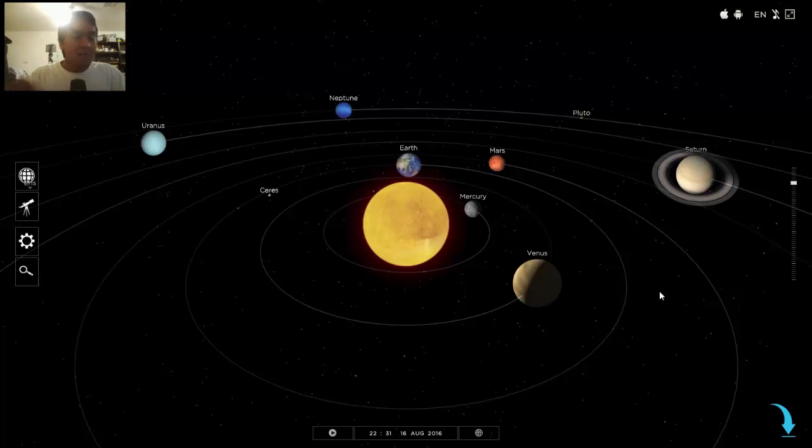You might know all the planets, you might not, but share this video with anyone who doesn't because they're going to learn all the planets in a fun way. There's only eight planets currently. Back in the day it used to be nine because Pluto used to be an original planet, but now it's just a dwarf planet.